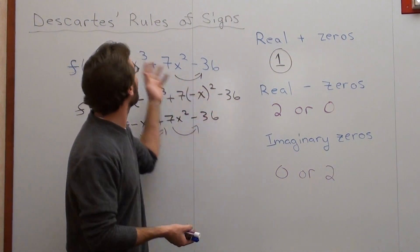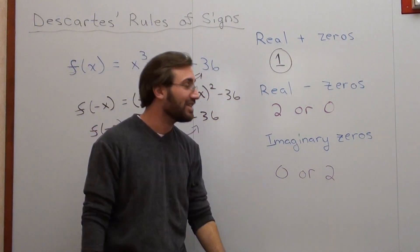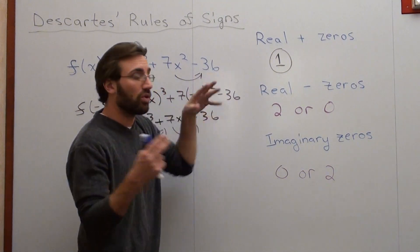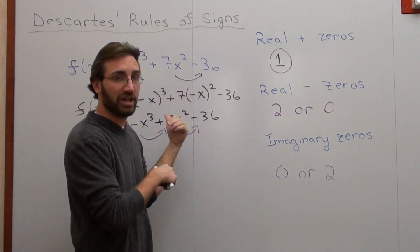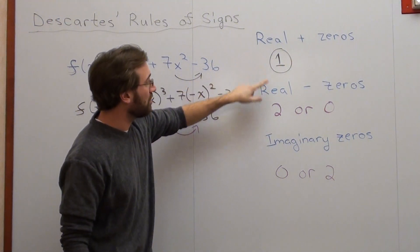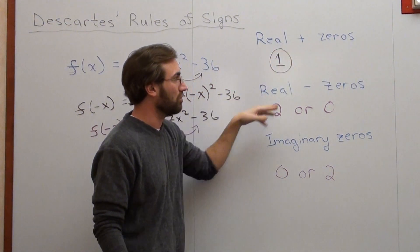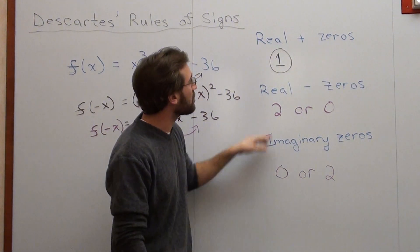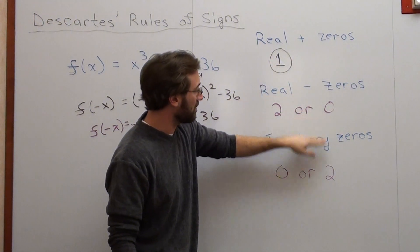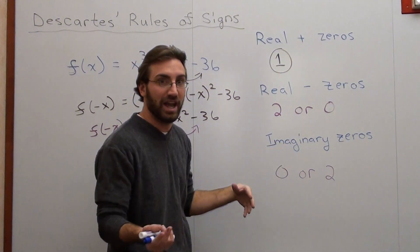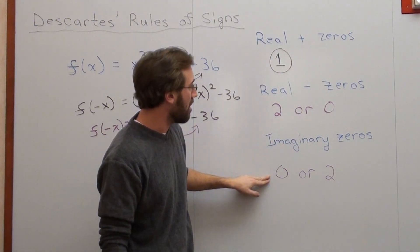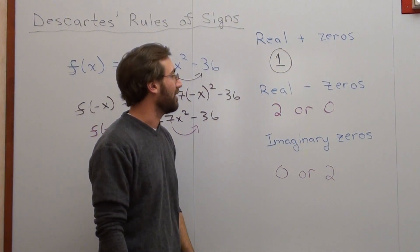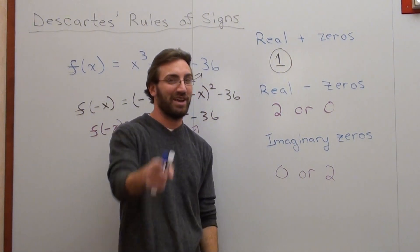I really don't have anything else to say about Descartes' Rule of Signs. That's pretty much it. You're going to be working with this problem in the next lesson with either one real positive zero, two real negative zeros, and no imaginary zeros, or one positive, zero negative, and two imaginary. It's got to be a combination that adds up to three. With that said, we'll get to that pretty soon. Have a good day. Goodbye.